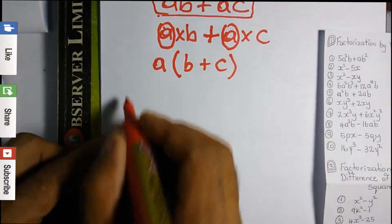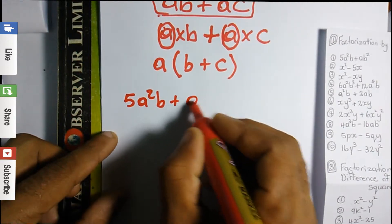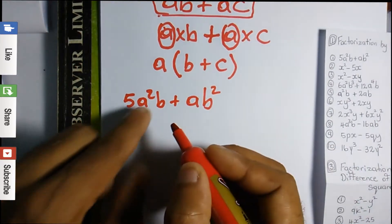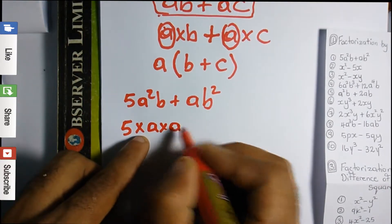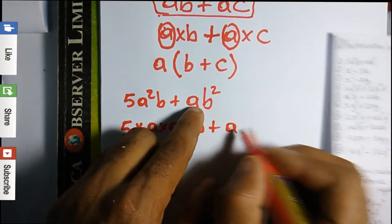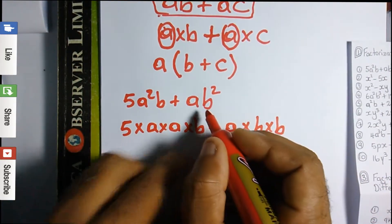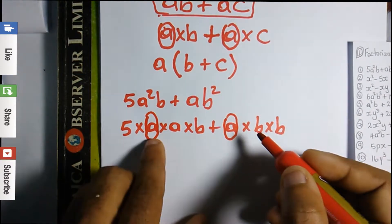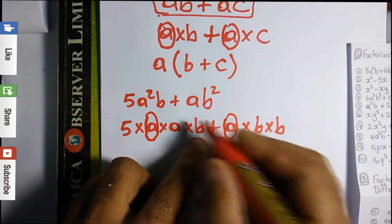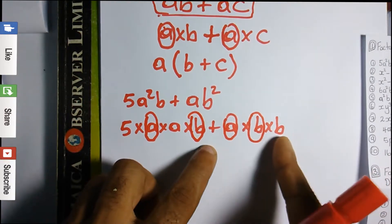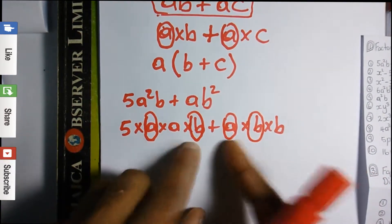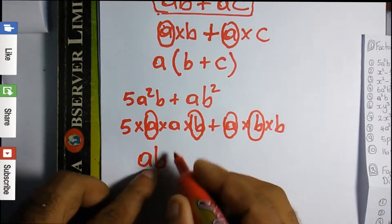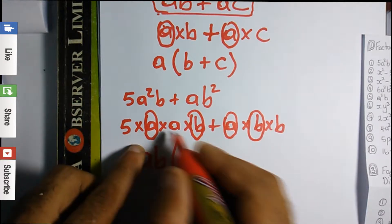Question 1: we have 5a²b + ab². The first thing we do is expand: 5 times a times a times b, plus a times b times b. Scanning both sides, a is common, and a times b is also common. We factor out ab, open a bracket, and what's left is 5a on the first term, so the answer is ab(5a + b).